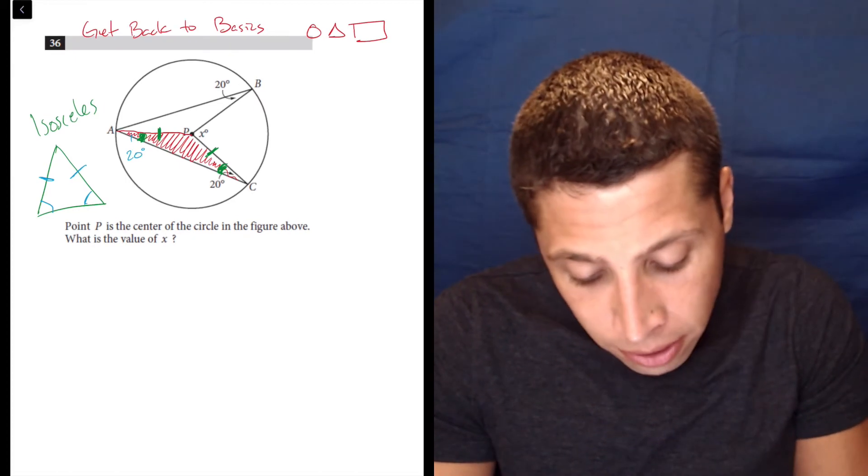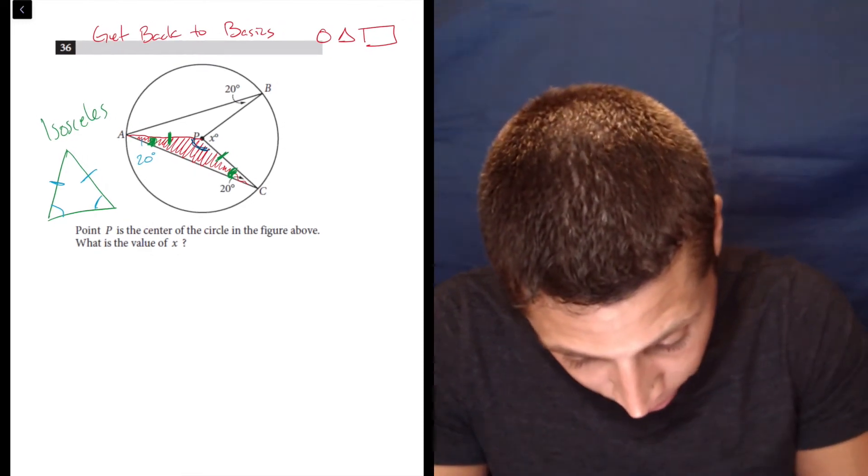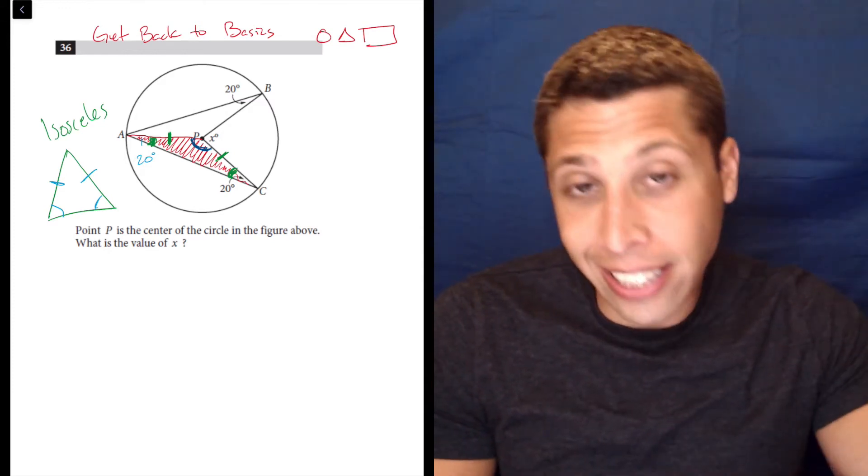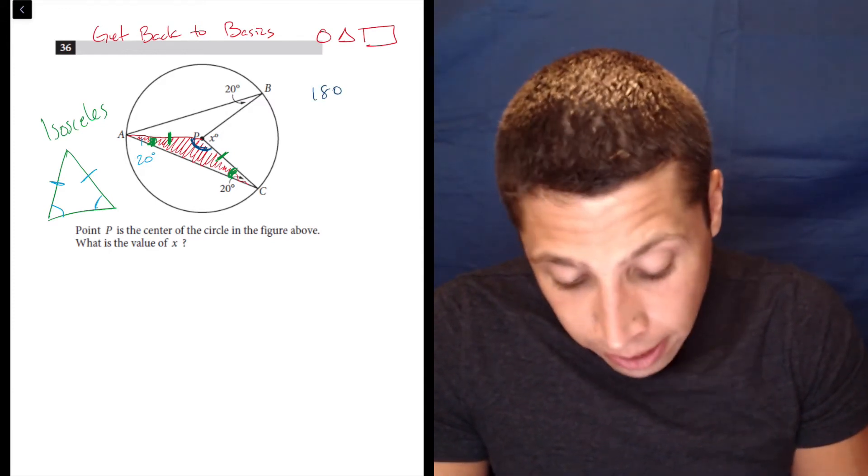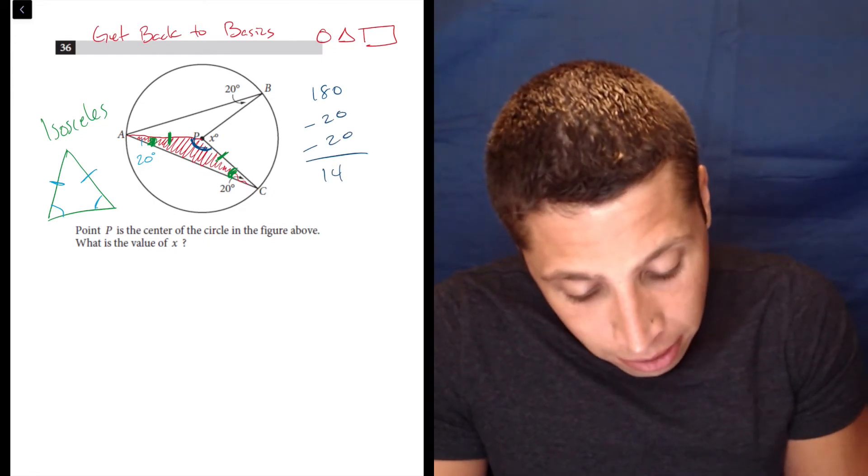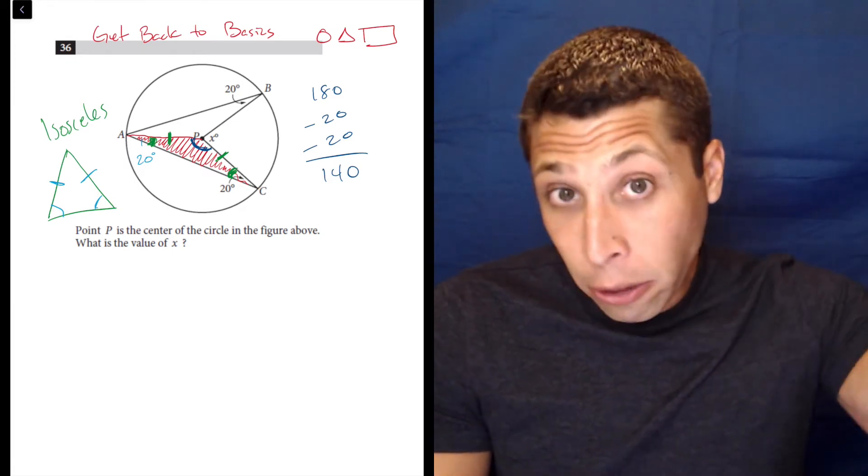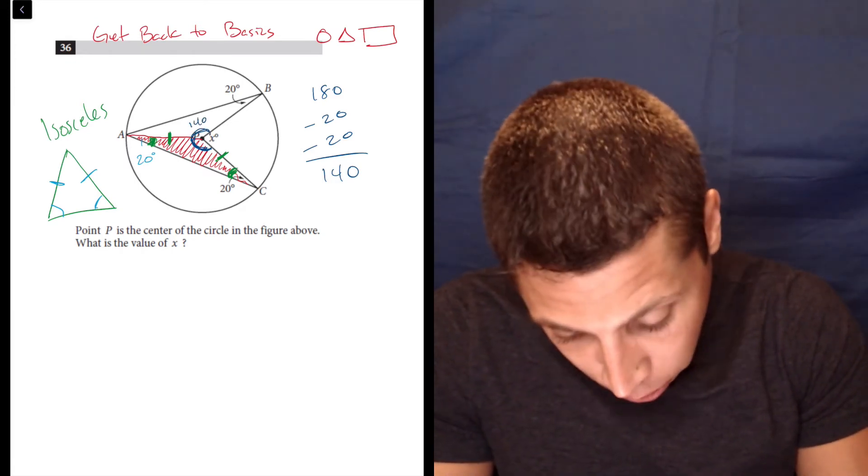And because of the rules of triangles, that means this angle at the top of the triangle is going to be whatever is left over. So we've got 180 in the triangle. We've got two 20's accounted for, so that means that's 140. And the other triangle, the one that's not shaded, is also going to have a 140 degree angle.